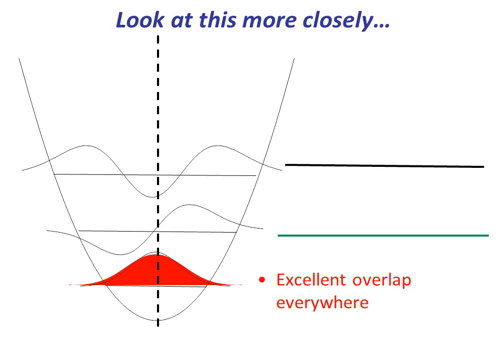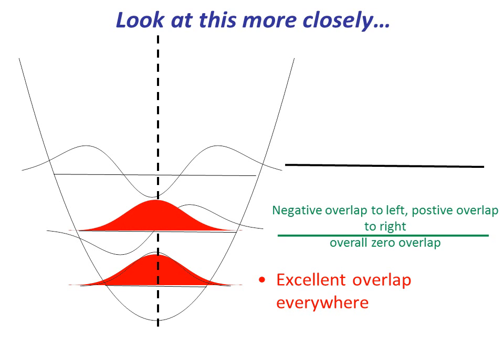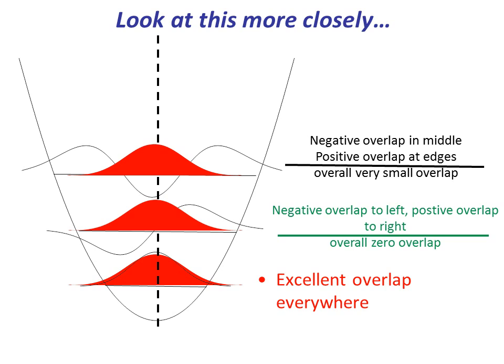Let's look at the overlaps more closely. In the scenario on the left, where you have a red curve and a black curve, which are the two ground state vibrational wave functions, the overlap is excellent everywhere since the wave functions are on top of each other. Looking at the overlap between the ground state vibrational wave function and the first excited state vibrational wave function, there is a negative overlap to the left and a positive overlap to the right, so the overall overlap is zero. Comparing this with the ground state and second excited state wave functions, there is a negative overlap in the middle and slight positive overlap on the edges, so the overall overlap is a small but finite quantity.